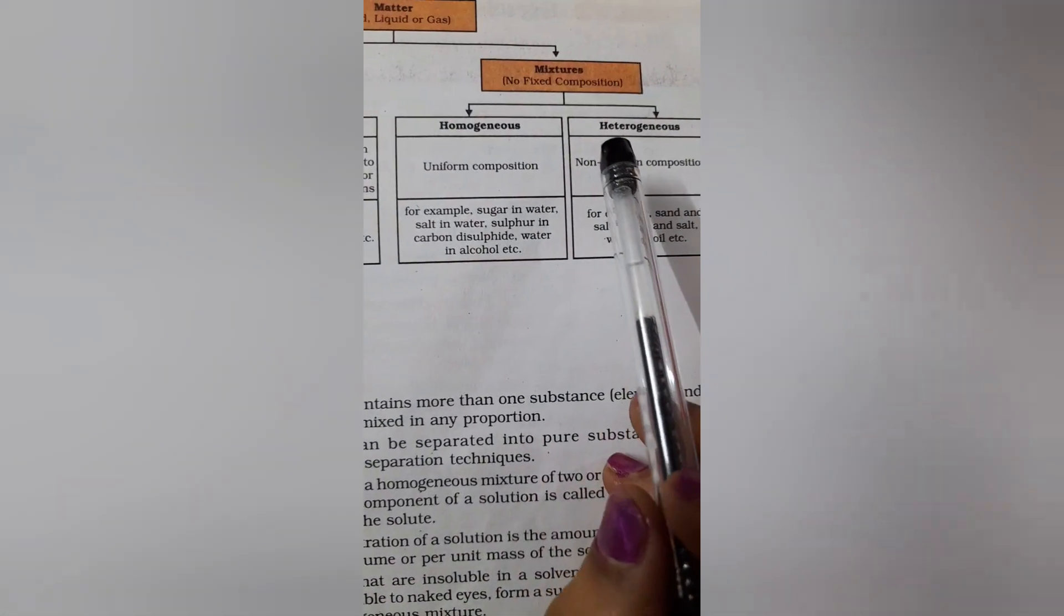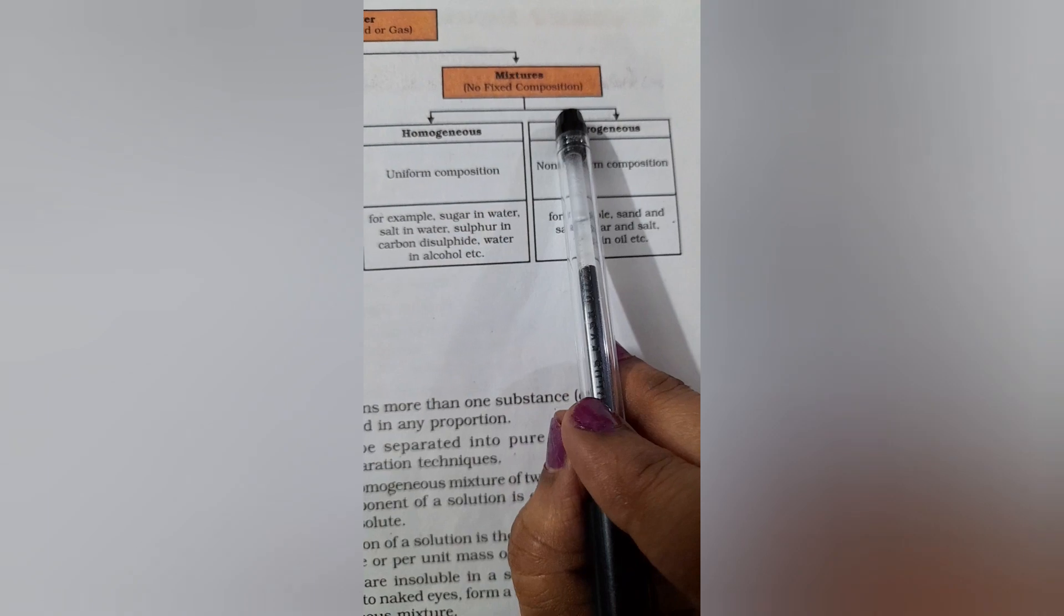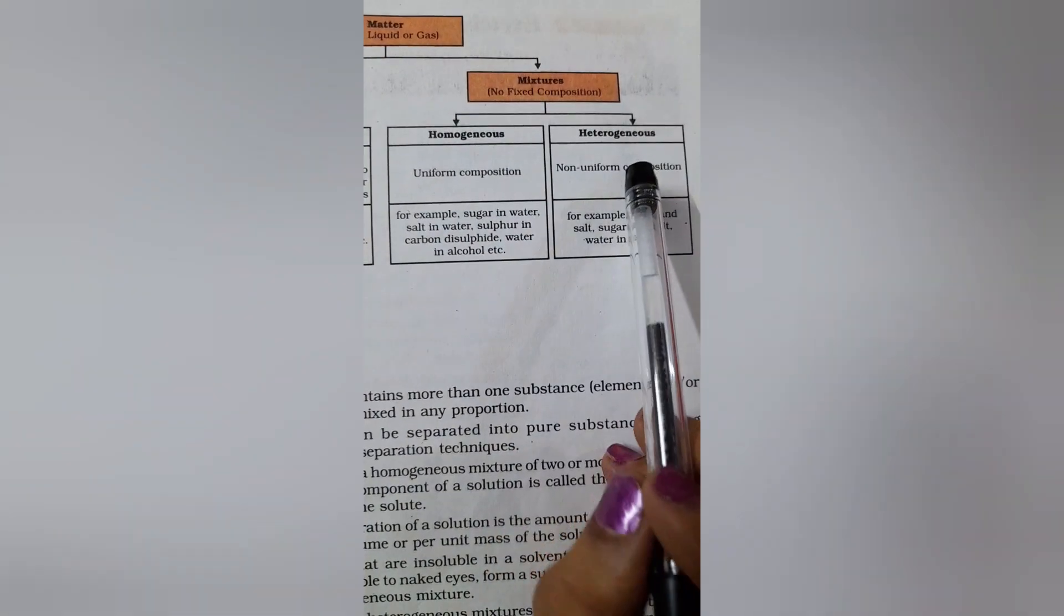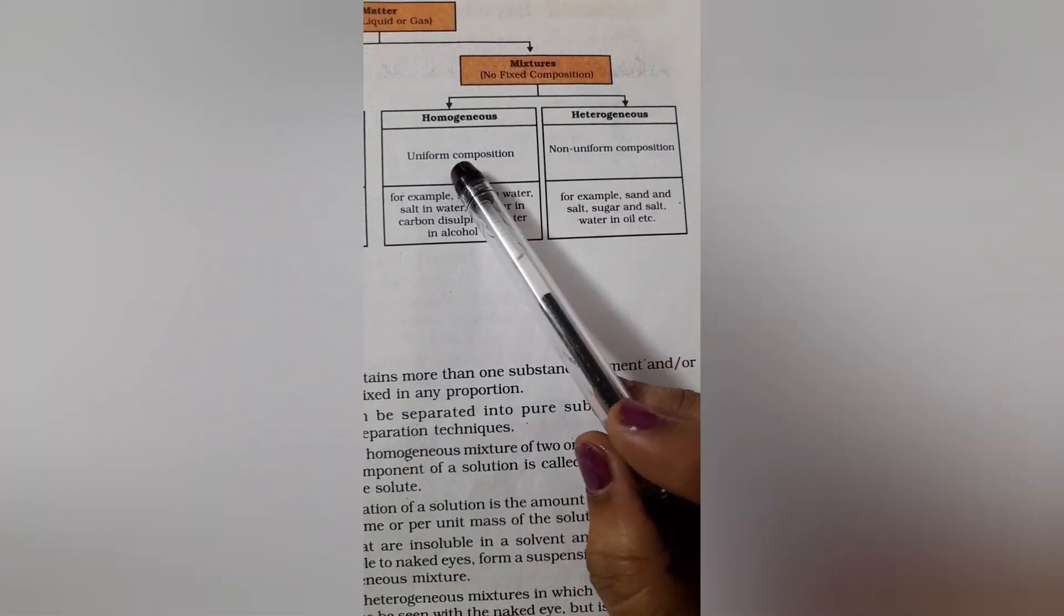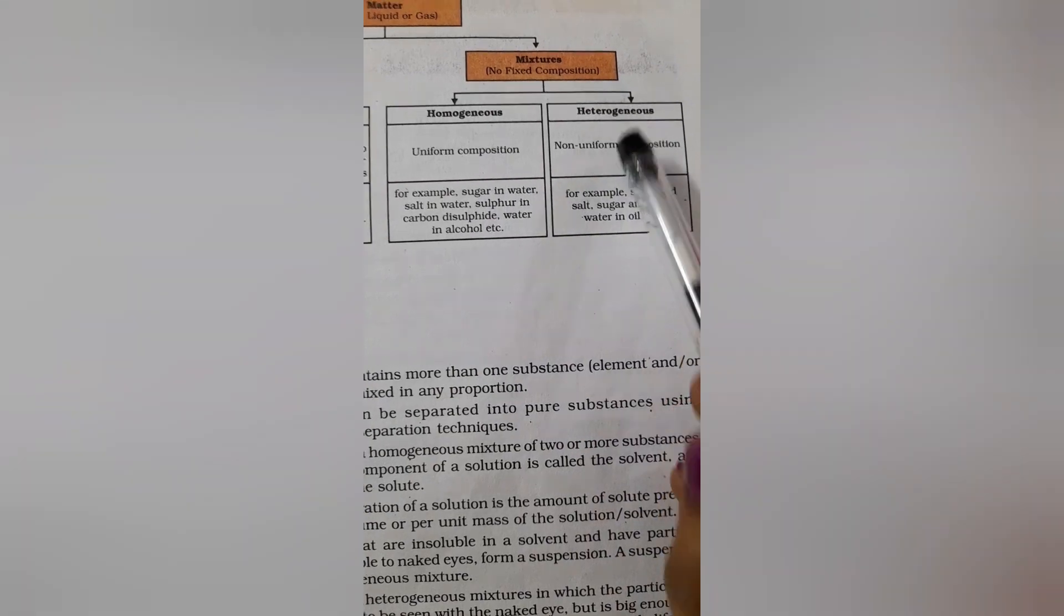Compound, they have fixed composition, can be broken down into elements by chemical or electrochemical reaction. Water, sugar etc are examples. Mixtures have no fixed composition. Homogeneous and heterogeneous are the 2 types. Homogeneous is uniform throughout, heterogeneous is non-uniform.